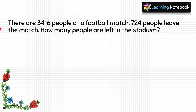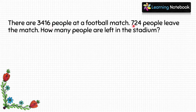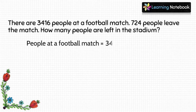Let's see the first word problem. There are 3416 people at a football match. 724 people leave the match, so how many people are left in the stadium? First, always understand the given word problem. We are given that 3416 people are present, but then 724 people leave, so we have to find how many people are left. That means we have to subtract these two numbers.